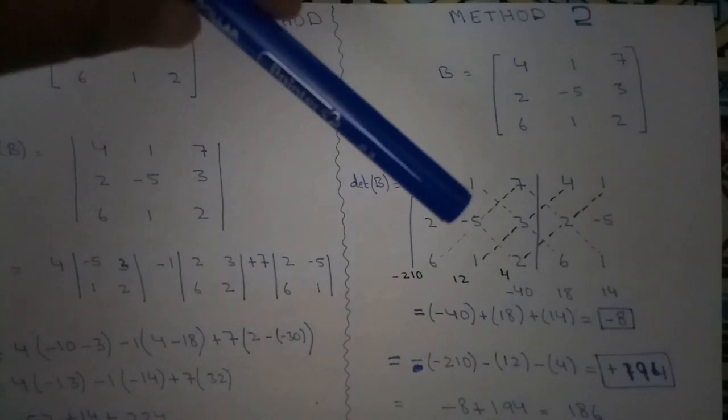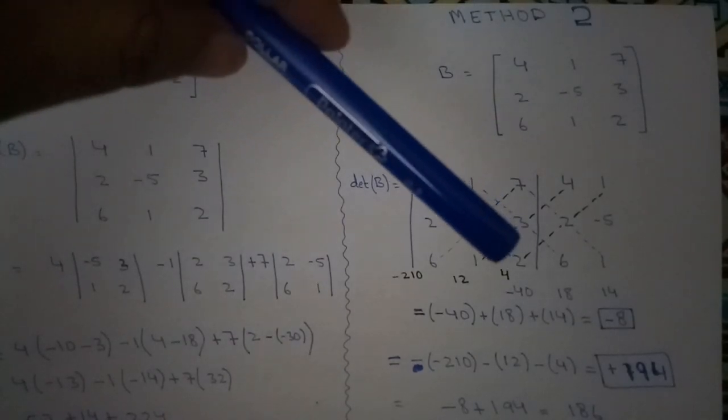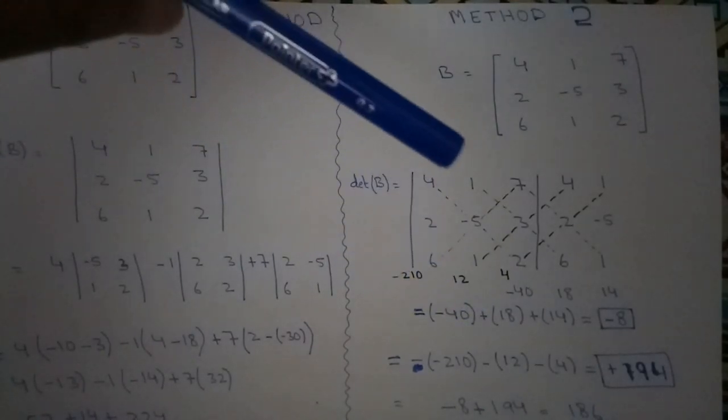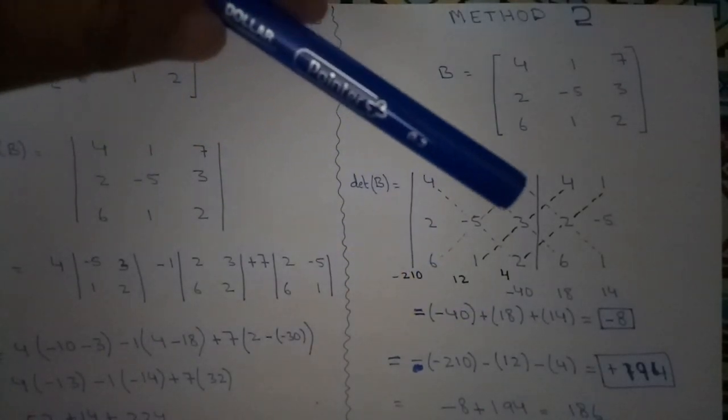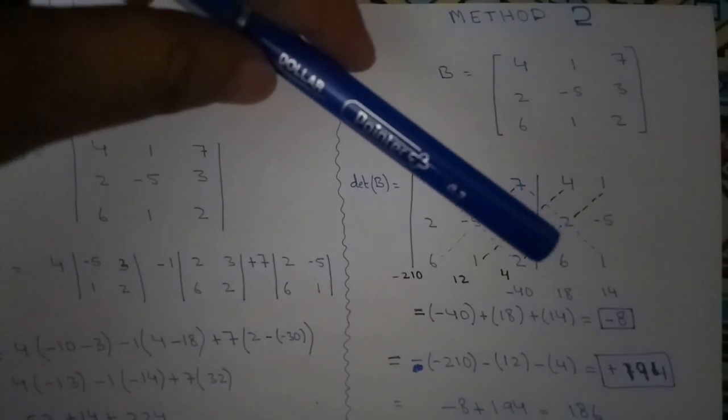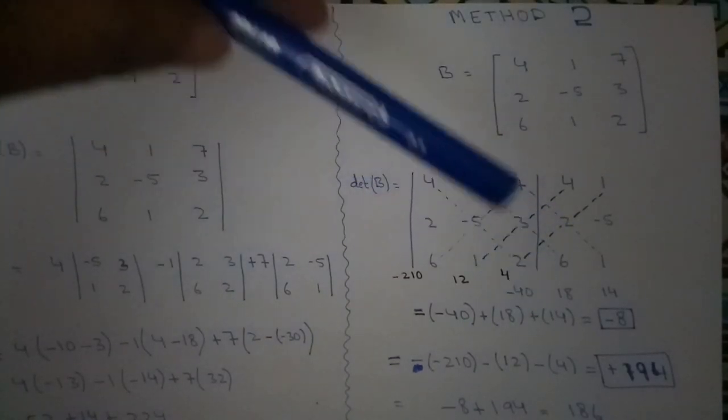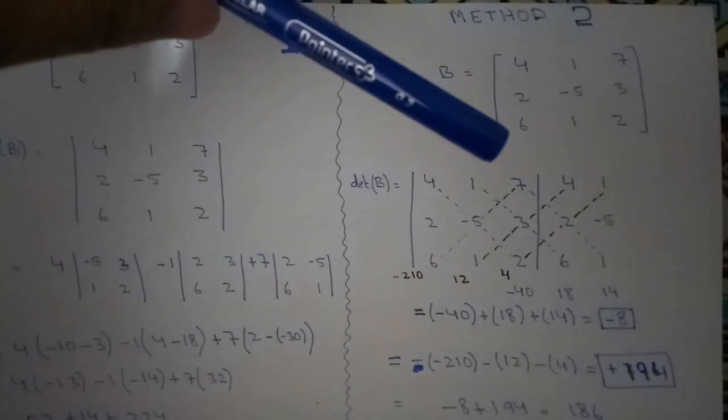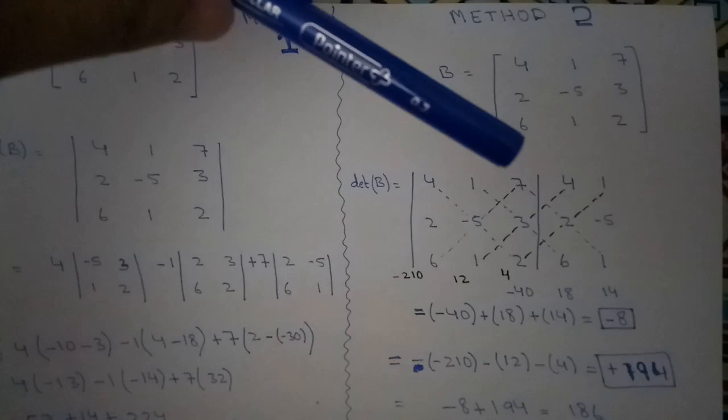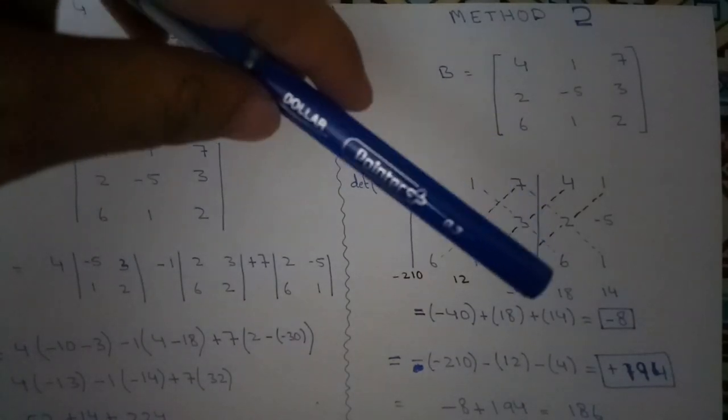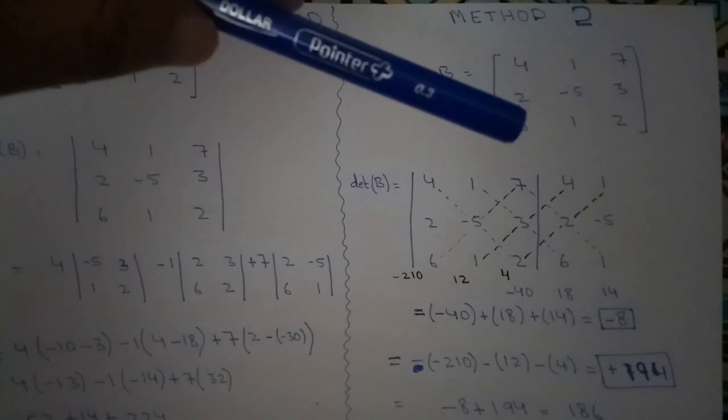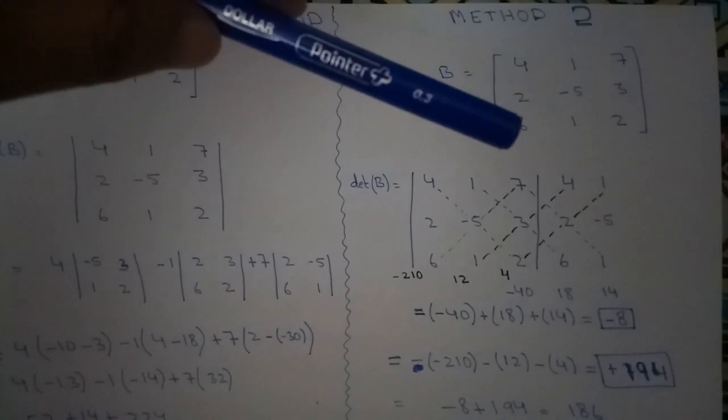What we will do is that we will multiply the diagonal elements. 4 multiply minus 5 multiply by 2, it will be minus 40. Similarly, 1 multiply 3 multiply 6 will be 18. 7 multiply by 2 multiply by 1, it will be 14.